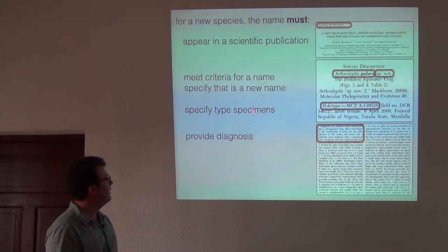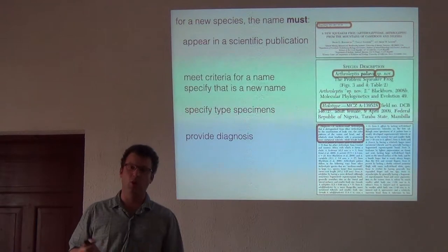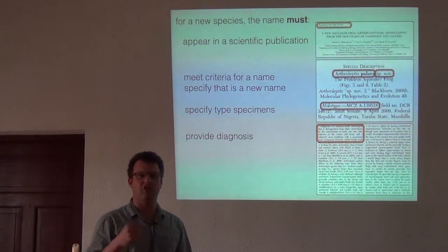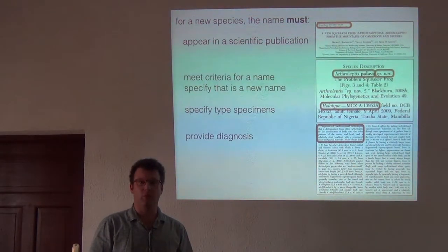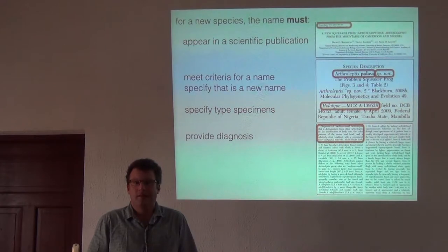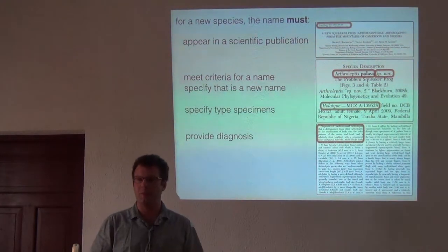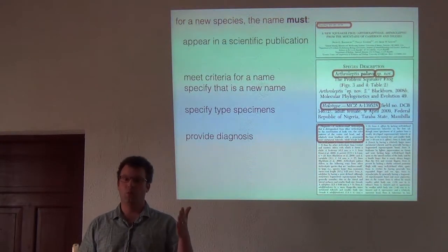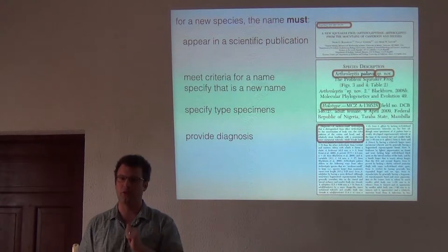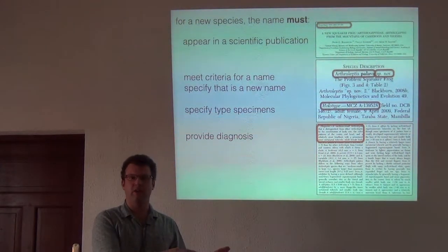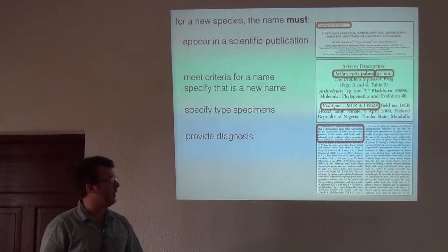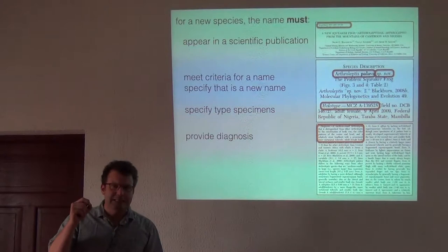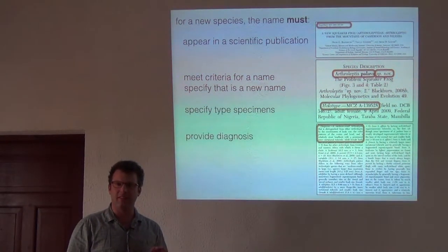You have to specify type specimens. In older literature, say pre-1930s, there can be cases where it's still an available name even though they didn't actually cite a specimen. What has happened over time is that the rules have changed. Normally we apply the rules up until 1930, where names are available based on less rigorous criteria, and then after 1999 they're even more rigorous. Now you must specify at least a holotype specimen. You can specify syntypes, but the code recommends against that.